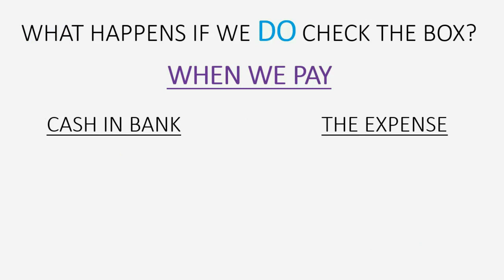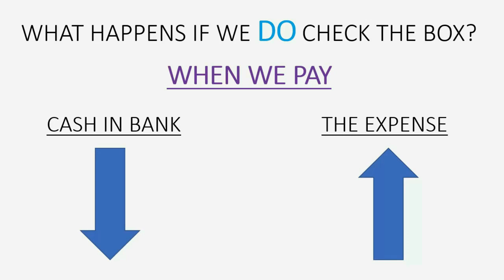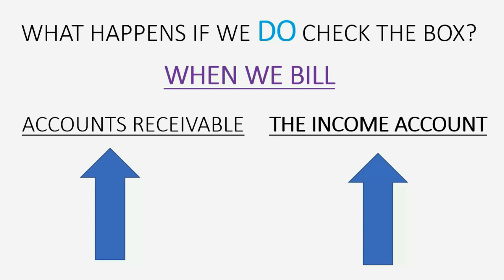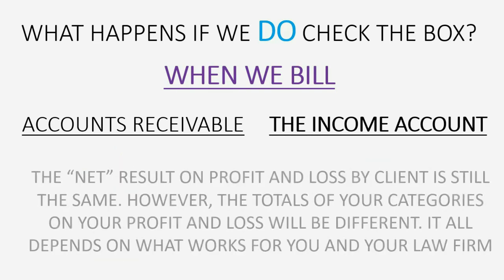If we do check the box, which is what we're learning in this video, there is no difference at the moment we actually pay the expense — cash goes down and our expense goes up, because at the moment we pay, QuickBooks does not yet know that we're going to bill the client. But at the moment we bill the client, instead of the expense going down, the income account goes up, and accounts receivable goes up by the amount we're billing for the billable expense.